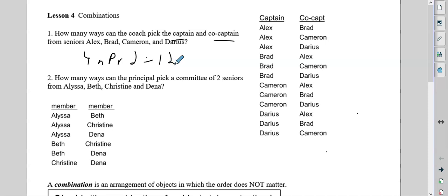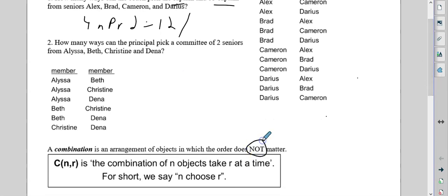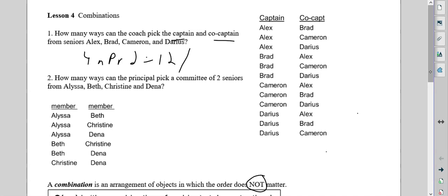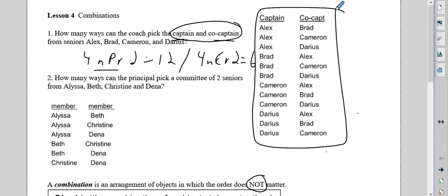Now, I will say that I would accept, if you went with the new lesson we're going with today, which is combinations, in which order does not matter. If you looked at this and said captain and co-captain are kind of equal ranks, they're not like a president and vice president, if you did four NCR two and got six, I would accept that because I can understand where you're coming from. But it is a ranking, so we would traditionally go NPR.